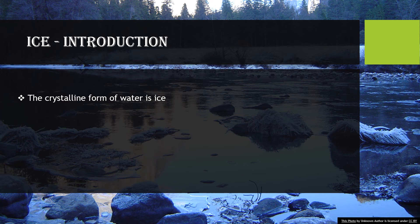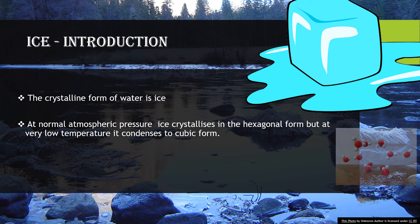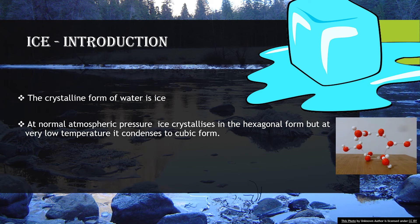The crystalline form of water is ice. At normal atmospheric pressure, ice crystallizes in the hexagonal form but at very low temperature, it condenses to cubic form.